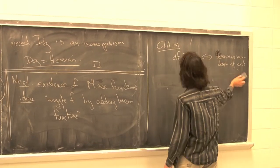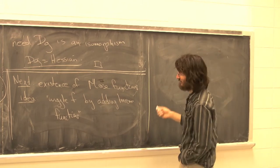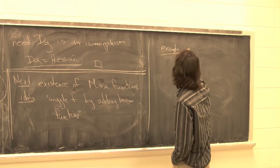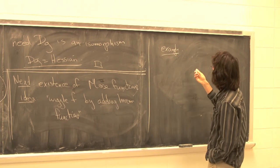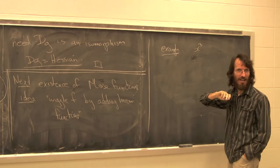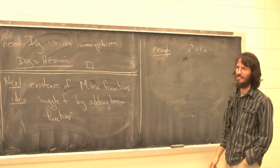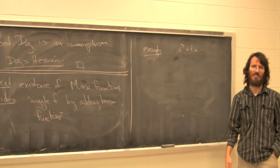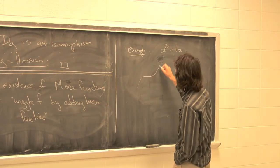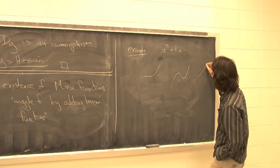Before showing that, let's see why adding linear functions is the right thing. In one variable, our prototypical example is x cubed. If we take x cubed and add a small tx, the Hessian becomes non-degenerate. We go from this degenerate case to either two non-degenerate critical points or no critical points at all — either it ceases to have a transverse intersection with the zero section, or it develops two.